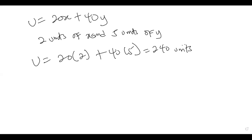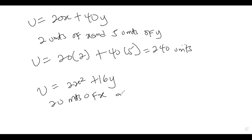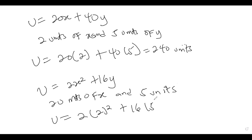If the function is instead U = 2X² + 16Y, and we consume 2 units of X and 5 units of Y, then U = 2(2²) + 16(5). The first part gives 8, and 16 times 5 gives 80, so the total utility is 88 utils.